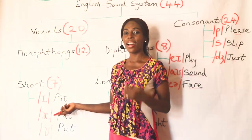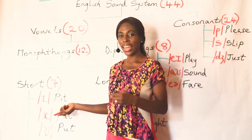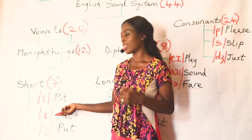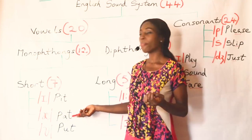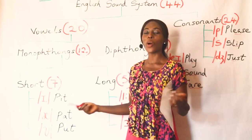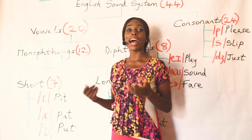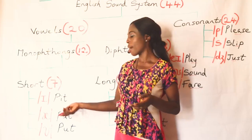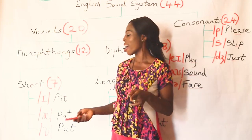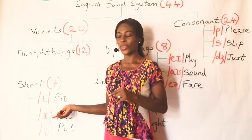Then we have /æ/ — the short A sound — as in 'part.' The common example we have is 'apple': A as in apple. So that A sound is this short /æ/.